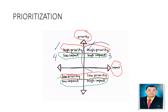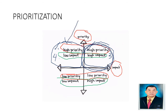Give high priority and high impact to the assessment that falls on that quadrant. Then your second priority is the one with a four-day submission. Now, if it is a group reporting and the deadline is maybe a week, it is still a high priority but low impact. If for example it is a two-week or month submission, it could be a high impact and low priority.